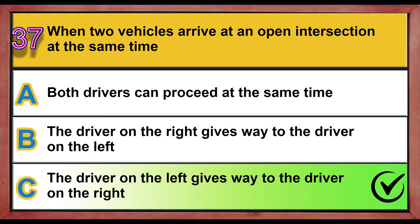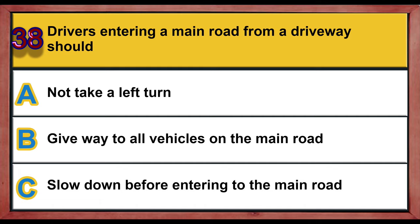Question 38. Drivers entering the main road from a driveway should: A. Not take a left turn. B. Give way to all vehicles on the main road. C. Slow down before entering the main road. Correct answer is B: Give way to all vehicles on the main road.